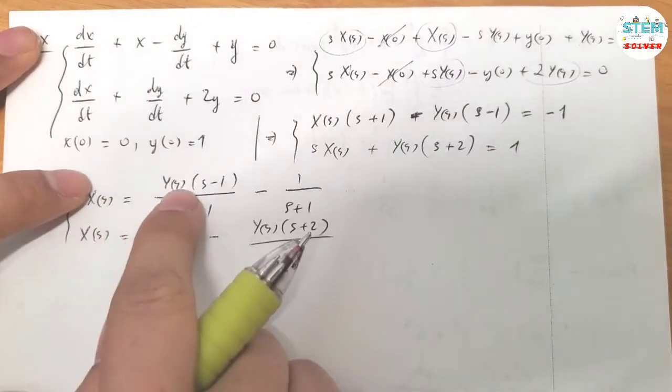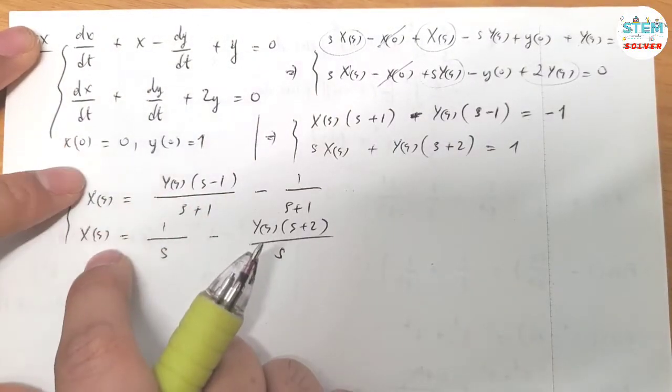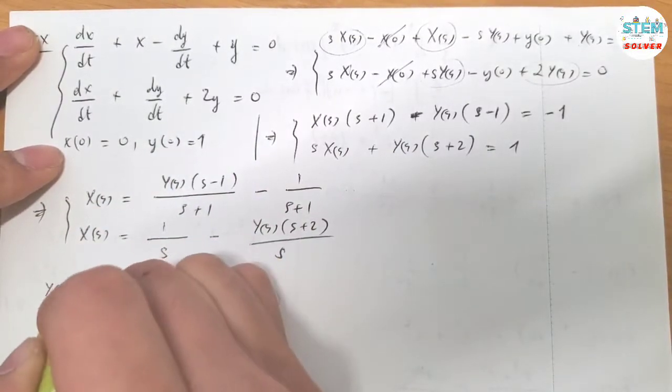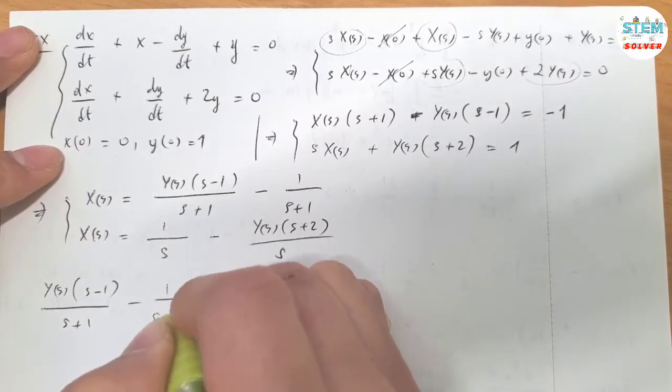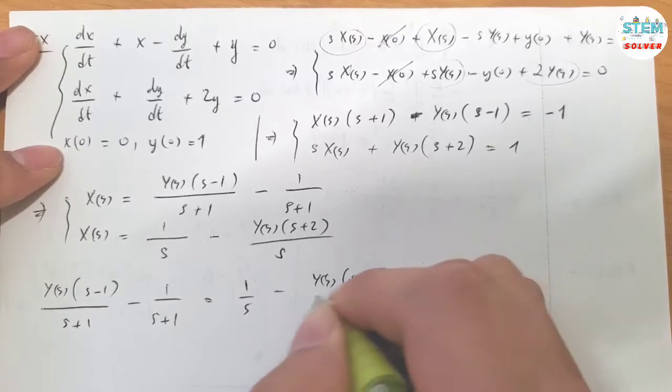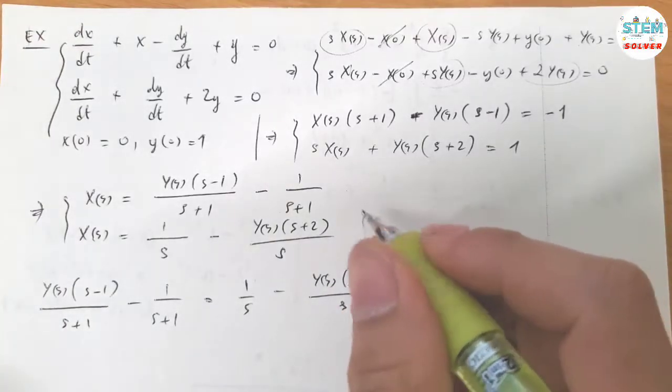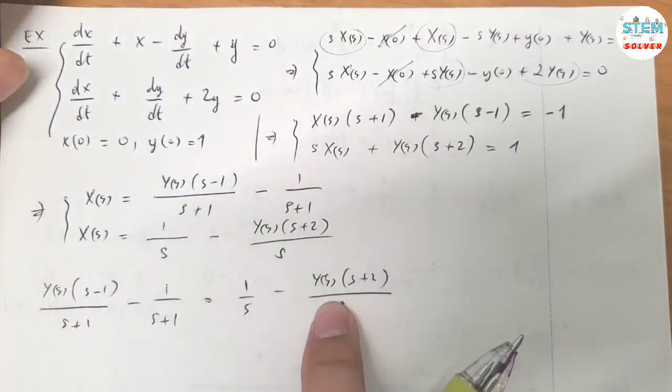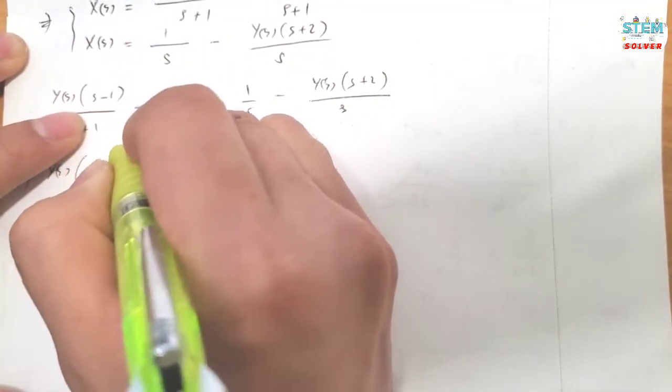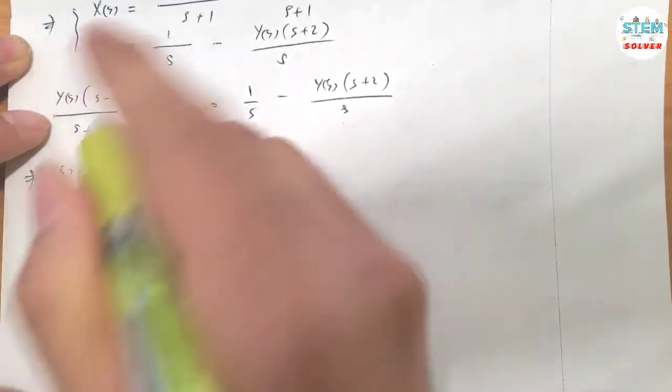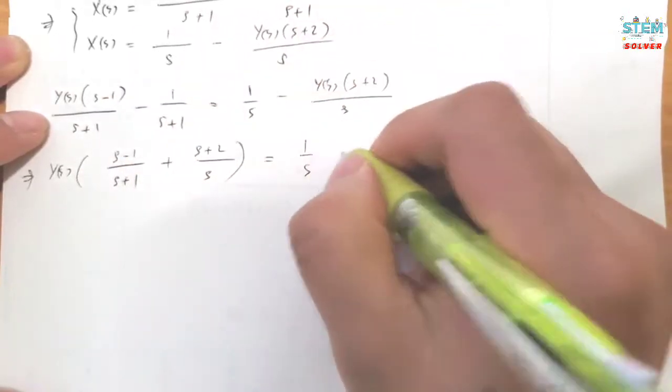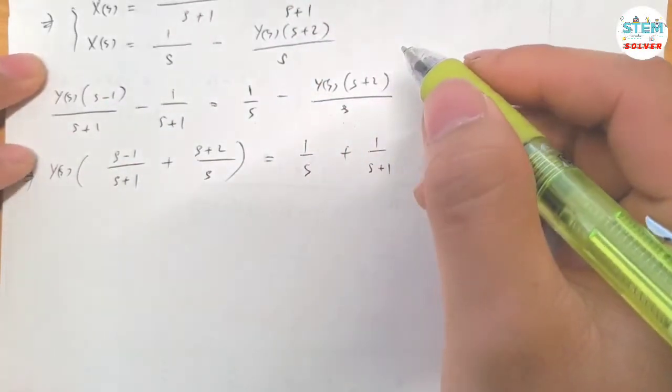Now since this and this, they are equal to X(s), set these equal to each other. And then solve for capital Y(s). This one is on both sides, so I'm going to move it to the left side and factor it out. So I have (S minus 1)/(S plus 1) plus (S plus 2)/S equals 1/S plus 1/(S plus 1).